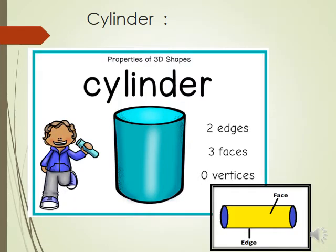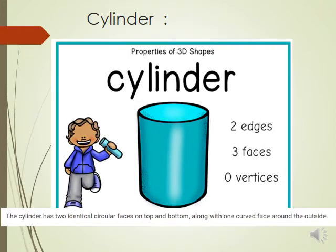Now we have the cylinder. The cylinder has two edges, three faces, and zero vertices. It has two identical circular faces on the top and bottom, along with one curved face around the outside.